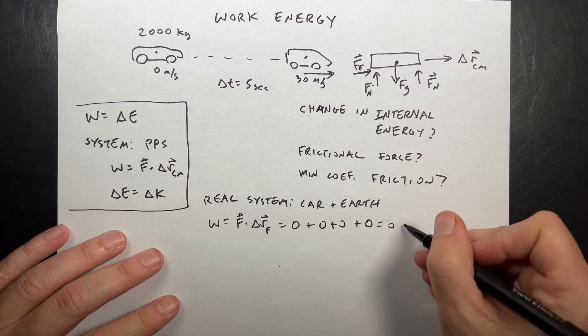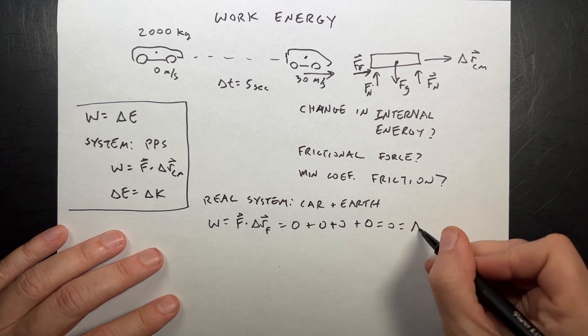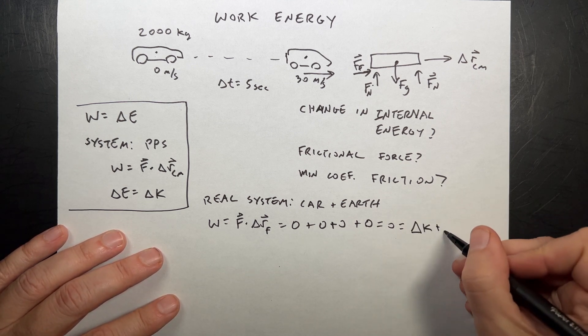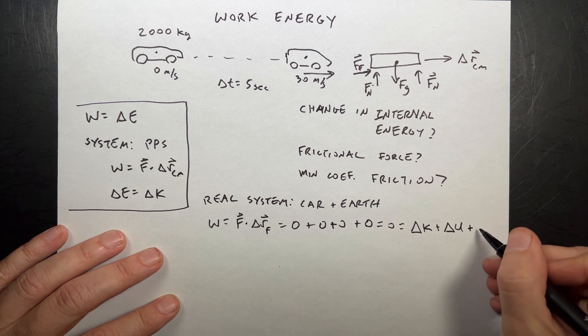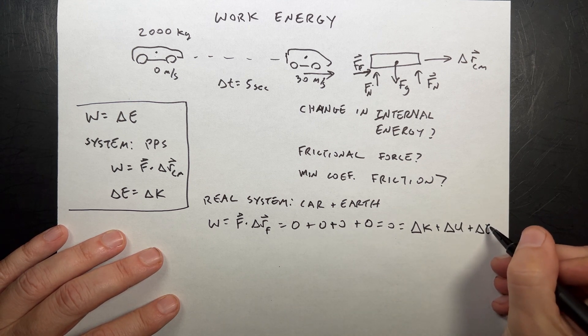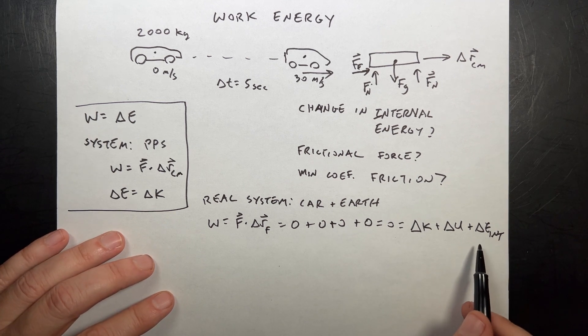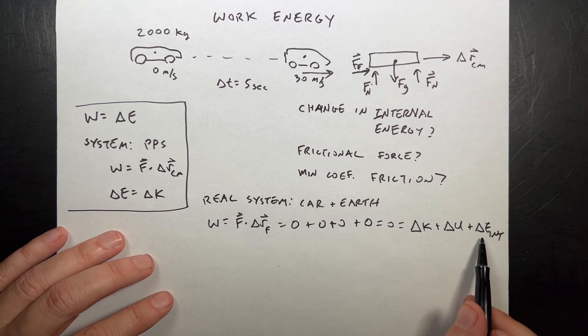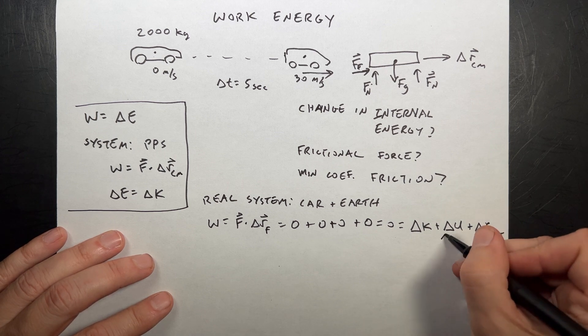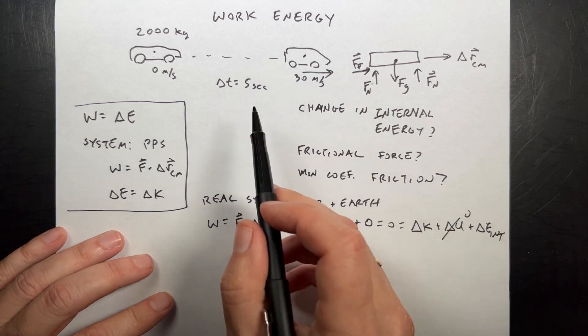So the work is zero. Well, that's fine. So now I can say that's going to be equal to the change in kinetic energy plus the change in gravitational energy plus the change in internal energy. And that's what we want to find. So the change in internal energy, the change in gravitational potential energy is zero because it doesn't move up or down.